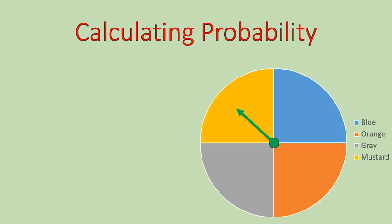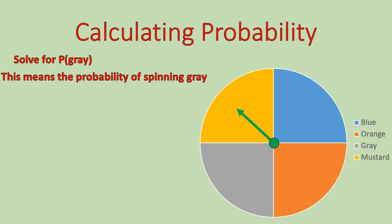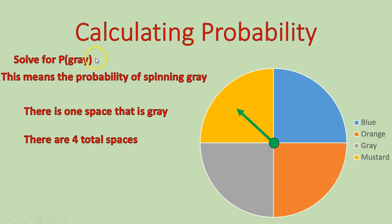Let's do a question with calculating probability. So I want you to solve for this. Capital letter P in parentheses gray. What that means is the probability of spinning a gray. So there is one space that is gray and there's four total spaces. The probability of spinning a gray is what we are looking for. That is our favorable outcome. That's what's inside the parentheses. That is going into the numerator. The total possible outcomes goes in the denominator. So the probability of rolling a gray is one out of four.